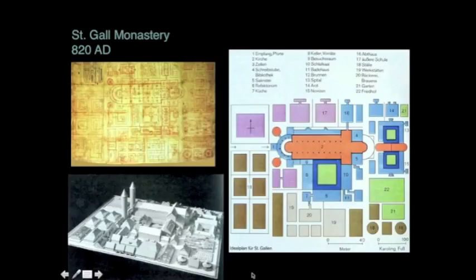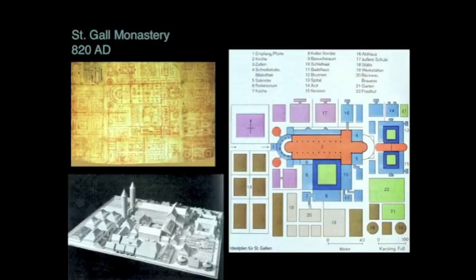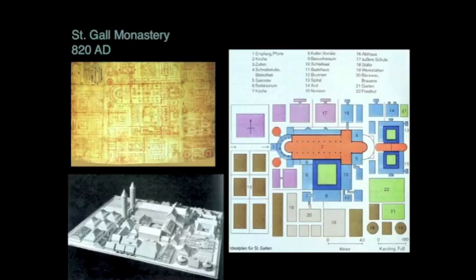I'm showing you the monastery at Saint-Gall to remind you of the kinds of forms the Ottonians would have been looking at. You can see a basilica with a transept, but something weird about Saint-Gall: it has two apses. In the early Christian churches in Italy and the pilgrimage churches in France and Spain, there tends to be one apse. But at Saint-Gall we have two apses, so the church functions in a different way because of that.